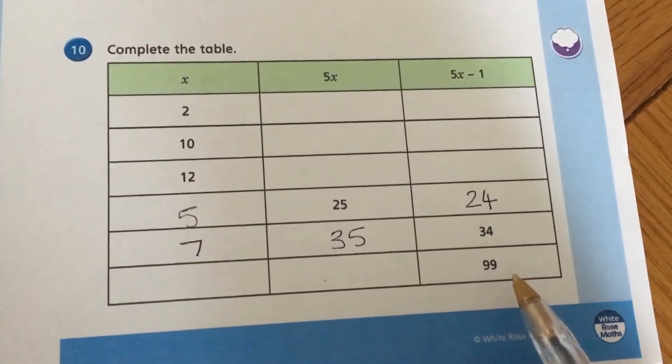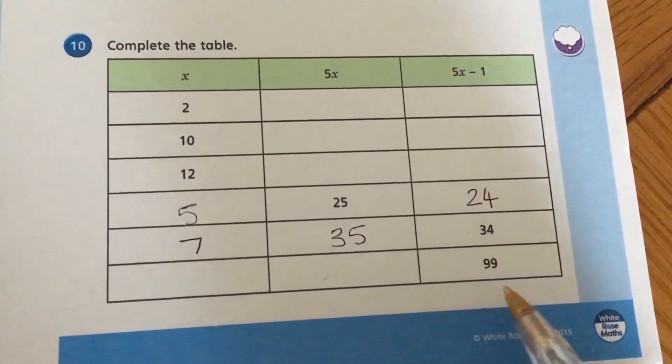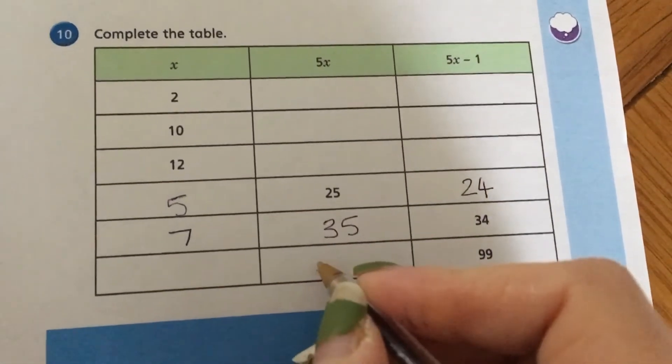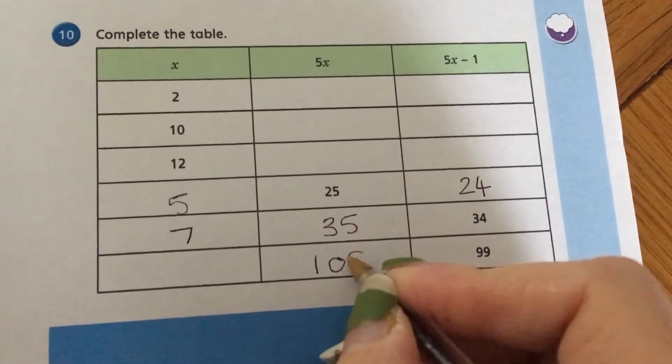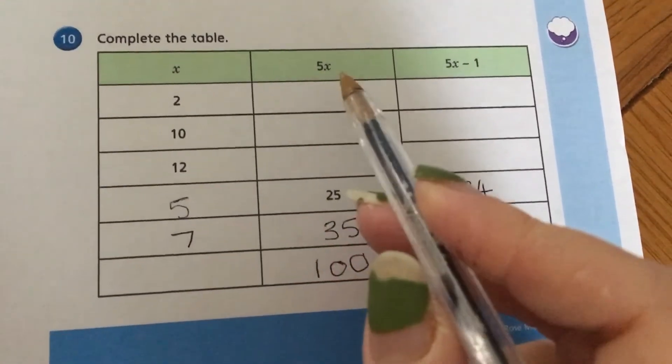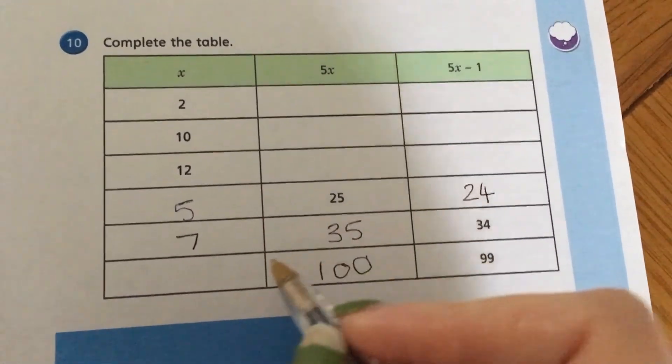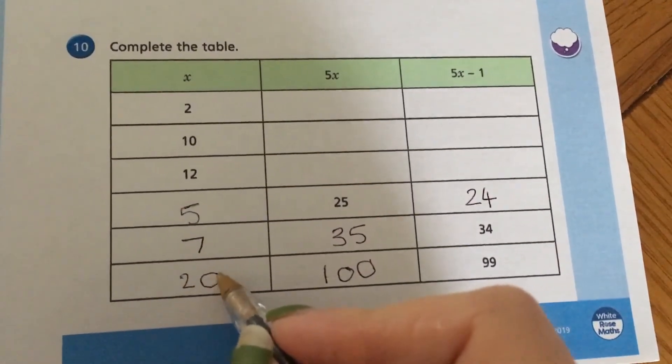Same with our last one, following that strategy, so we've got to add on 1 to do the inverse. So our 5x is 100, and then we've got to divide 100 by 5 to get what x is, so we've got 20.